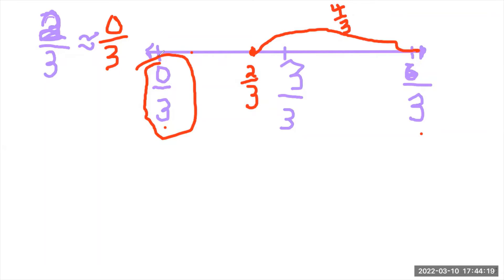If you said zero thirds, then you are correct. Because if I go from zero thirds to two thirds, it takes only two thirds. But I've heard from zero thirds to three thirds, which is further. So zero third is what two thirds rounds to.